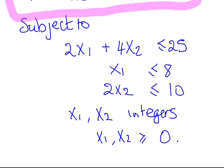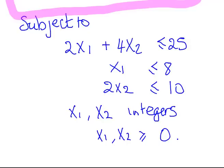It's subject to the following constraints. This is the general integer programming problem. We're going to maximize 3x1 plus 5x2 subject to 2x1 plus 4x2 less than or equal to 25, x1 less than or equal to 8, 2x2 less than or equal to 10, where x1 and x2 are integers and x1, x2 are non-negative.